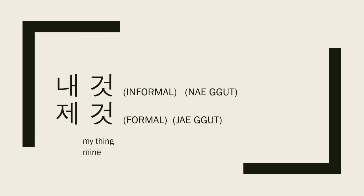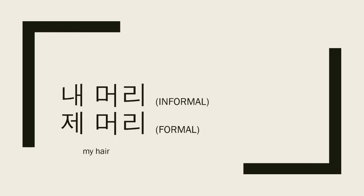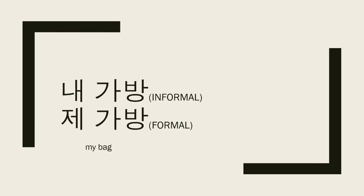Listen to the pronunciation — it's not flat; it's 내 것 and 제 것. Here's another example: 내 머리 and 제 머리, meaning 'my hair' or 'my head.' And 내 가방 and 제 가방, meaning 'my bag.'